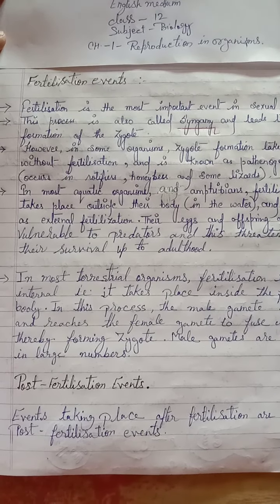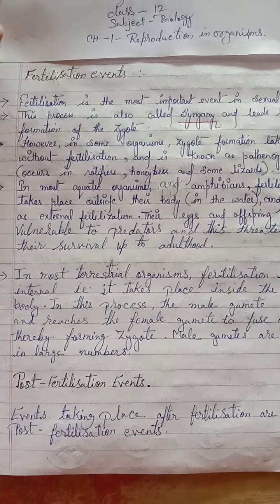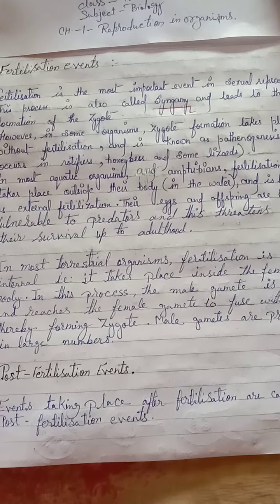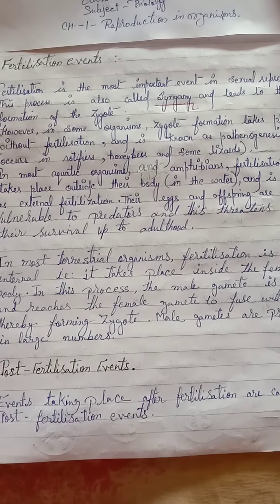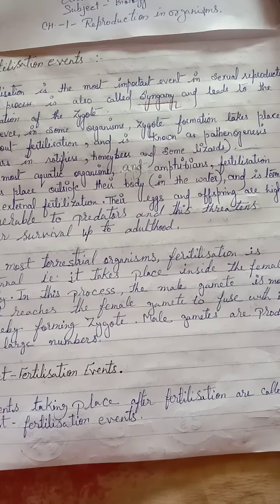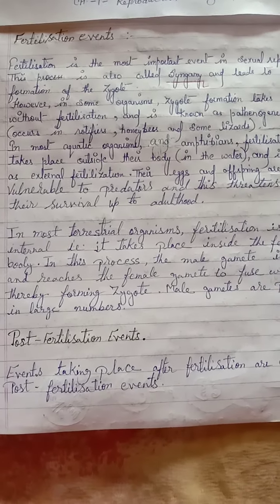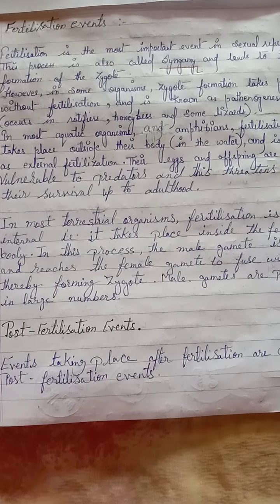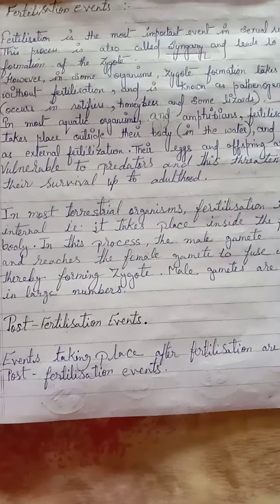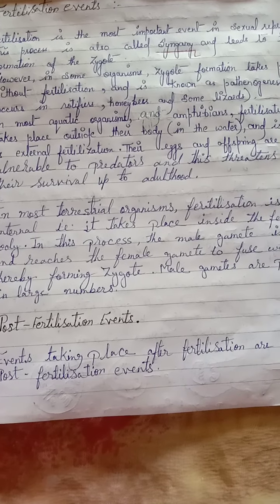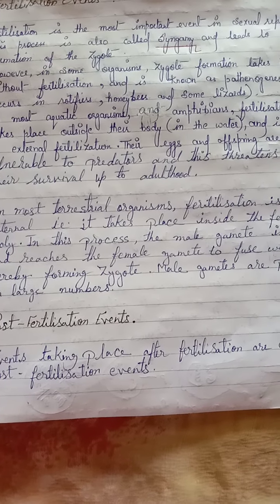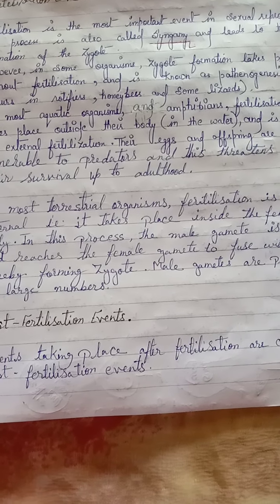Sexual Reproduction — Fertilization Events. Fertilization is the most important event in sexual reproduction. This process is also called Syngamy — the fusion of two cells that leads to the formation of the zygote. However, in some organisms, zygote formation takes place without fertilization and is known as parthenogenesis. This occurs in rotifers, honeybees, and some lizards.